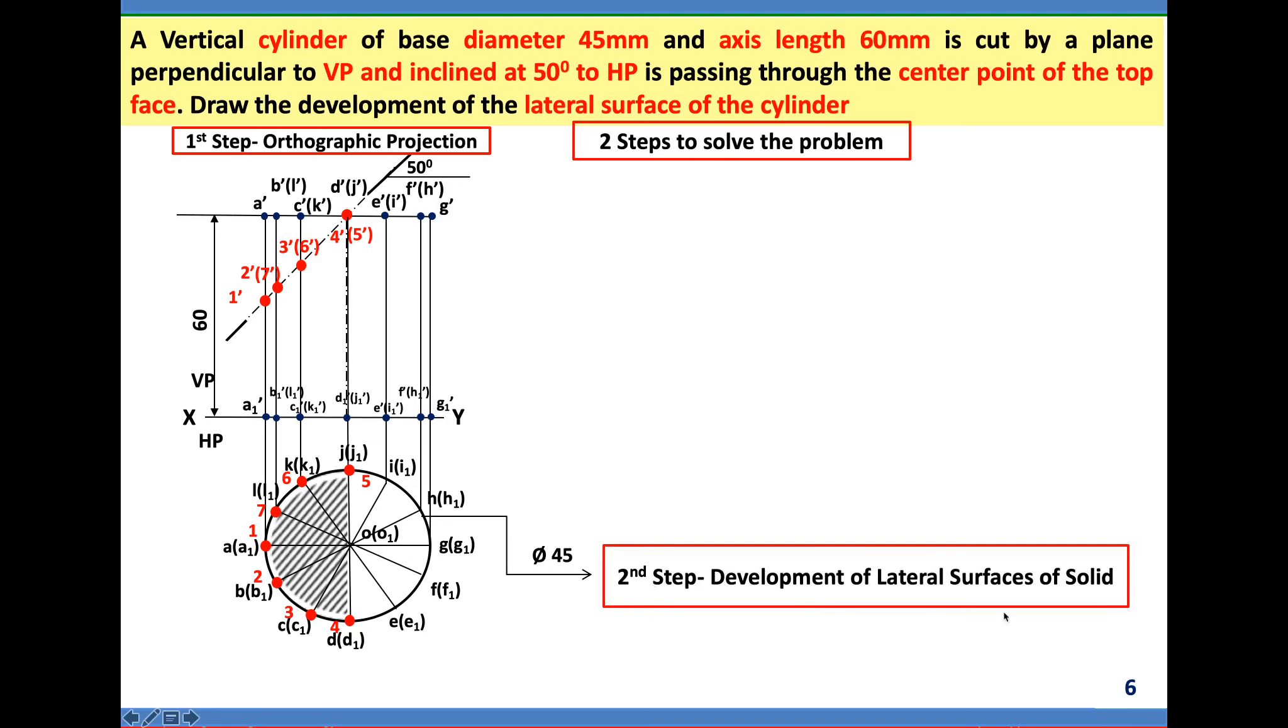Second step: development of lateral surface of the cylinder. Let me take advantage of extending XY so that I can use the height. From this, use the formula pi D. D is equal to diameter 45. Pi into 45 is 142mm. If you get fraction, round it off. Then draw this length. What is vertical height? Height is equal to 60. Then construct the rectangle.